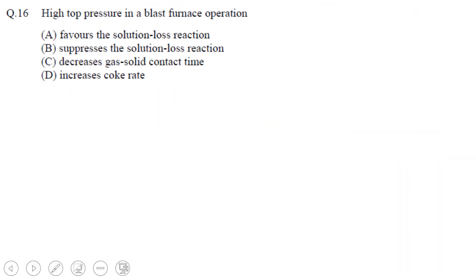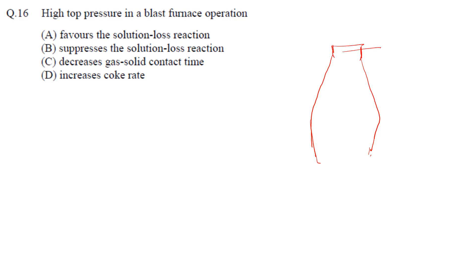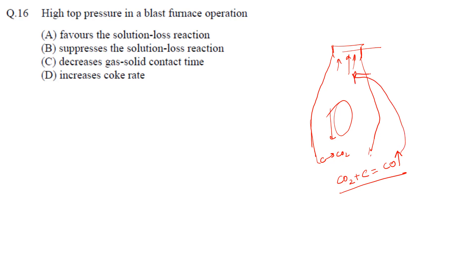The next question is about high top pressure in a blast furnace operation. At the top of the blast furnace, when we create high pressure — meaning we do not allow easy escape of CO — the reaction producing CO2 from initial carbon burning continues. The CO2 then reacts with coke: CO2 + C → 2CO, and this CO creates pressure at the top.